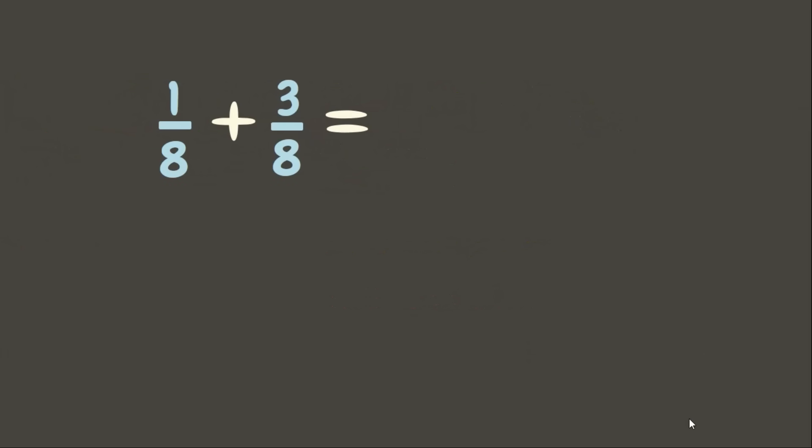Let's try some more examples. One-eighth plus three-eighths — add the numerators: one plus three equals four. Copy the common denominator, eight. Now let's simplify this fraction.